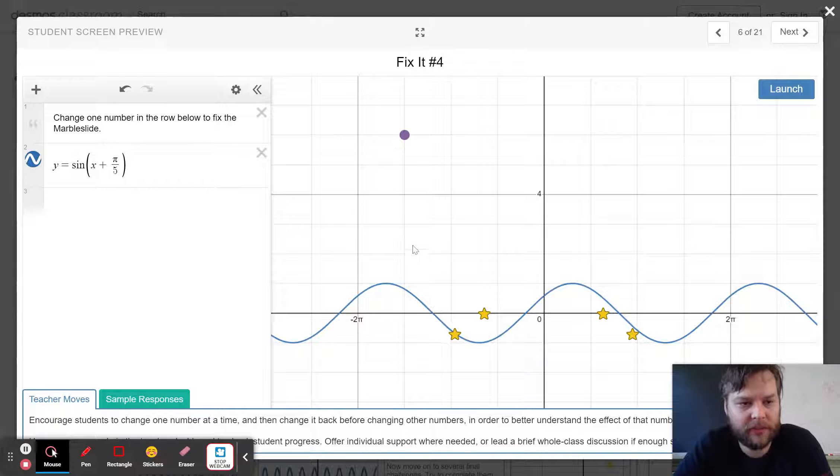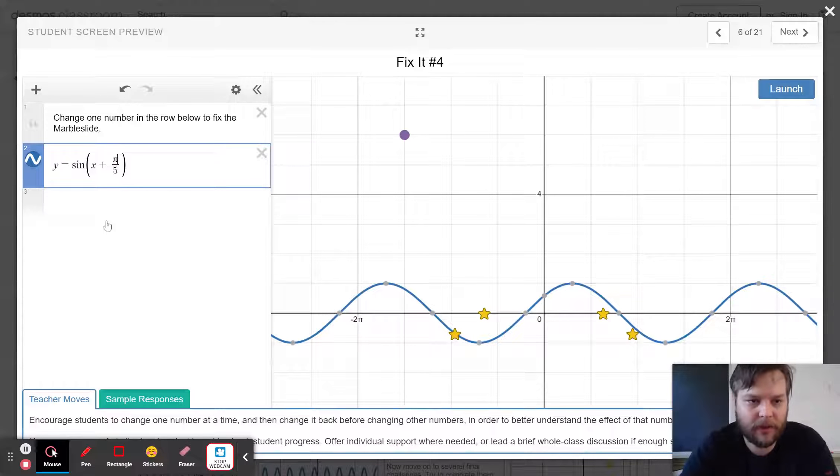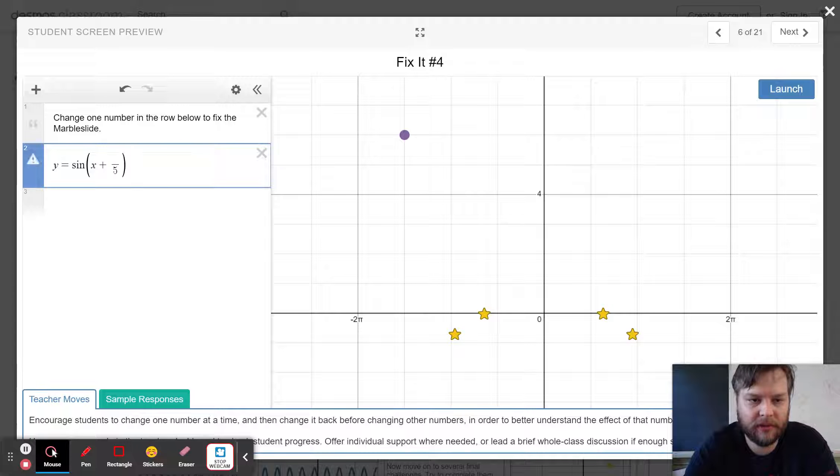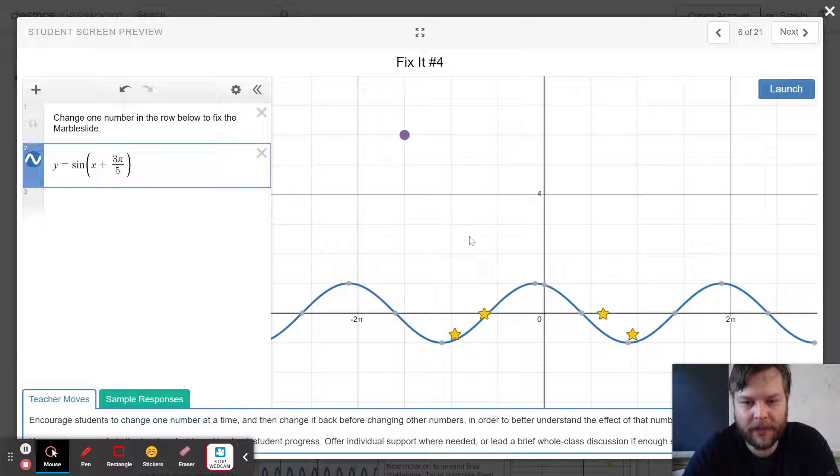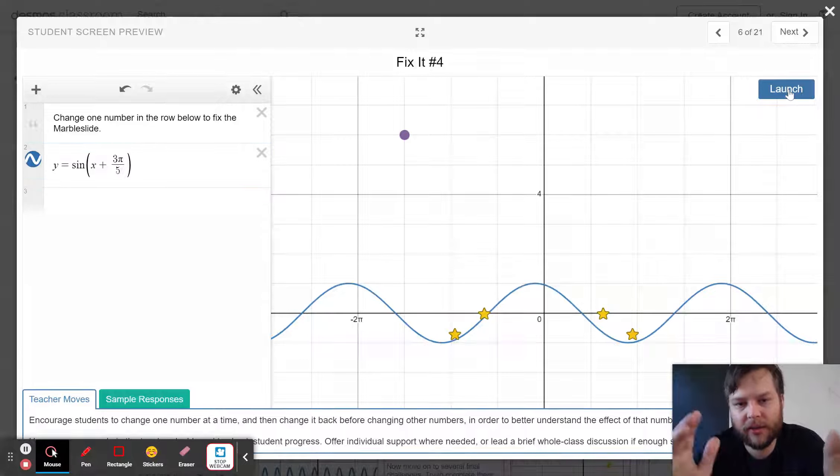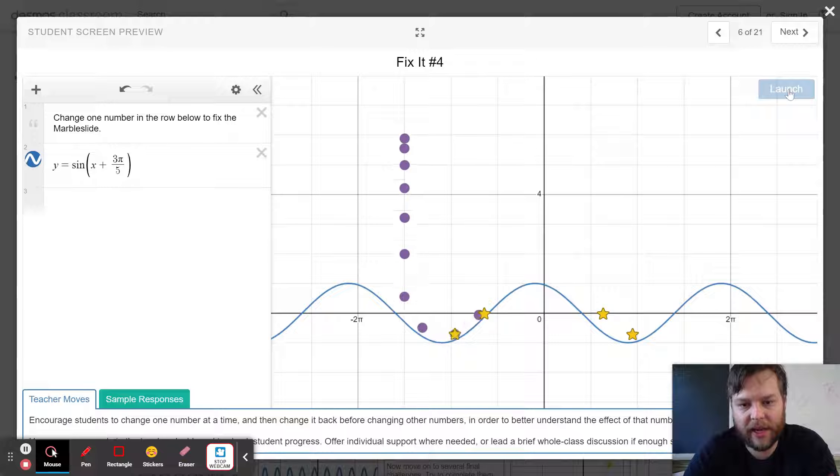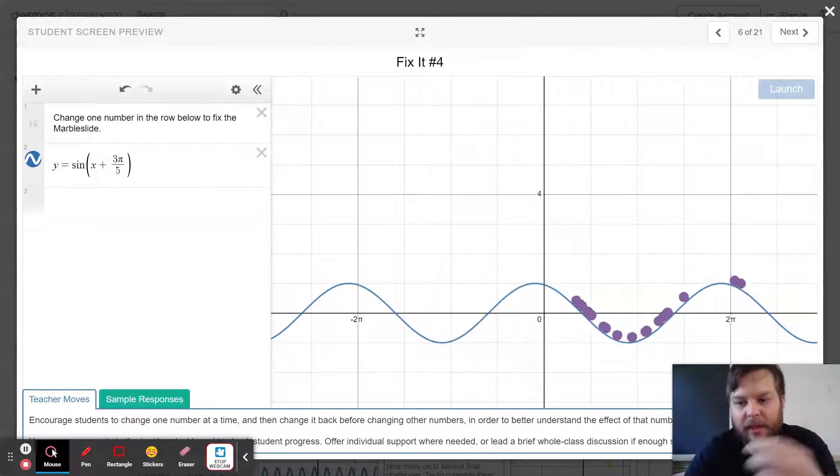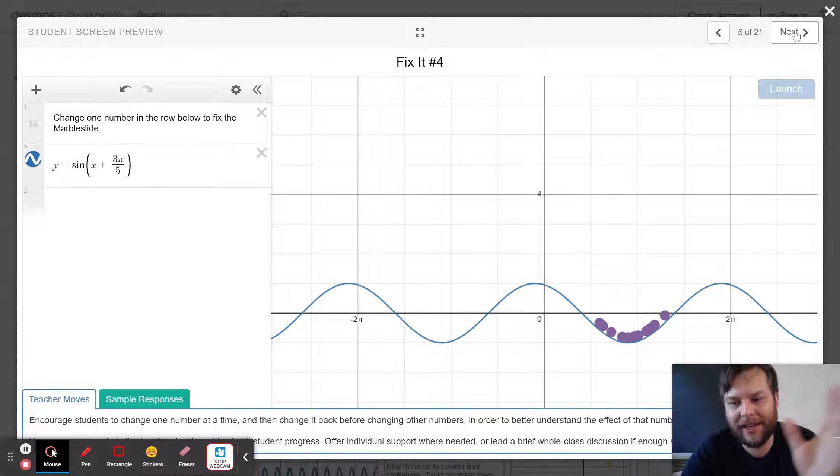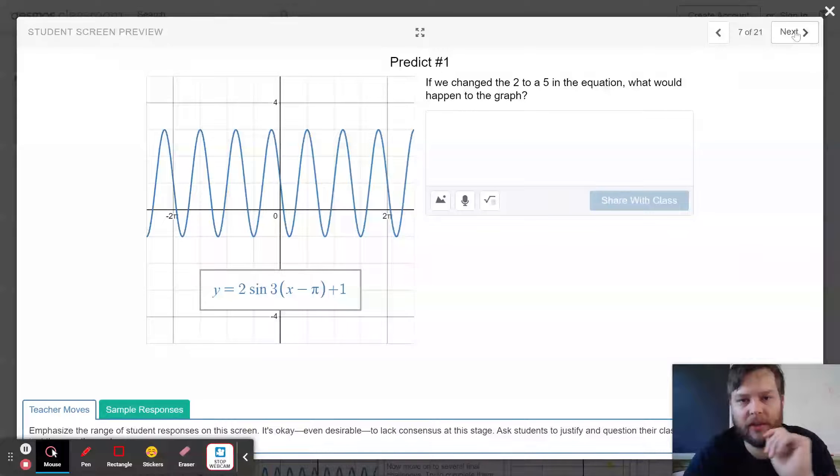Change one number to fix it. The pi over 5 is a shifting number. If I change that number to something different like 2 pi over 5 or 3 pi over 5, we might be able to get it. Notice that as I changed that number inside the parentheses, it shifted the graph left and right. And so that's how I was able to move my ramp to where the stars are going.